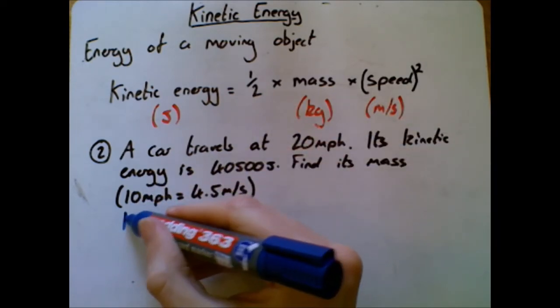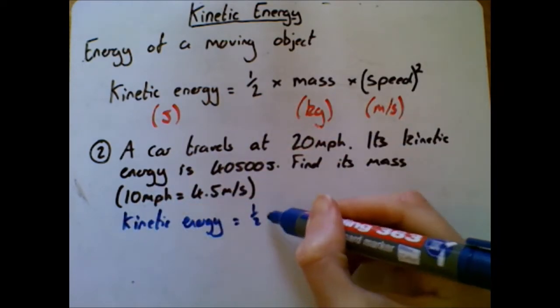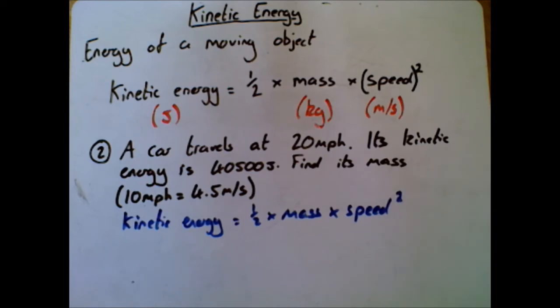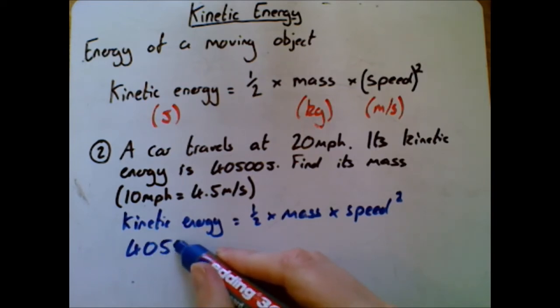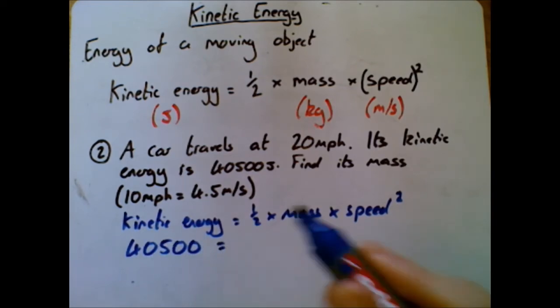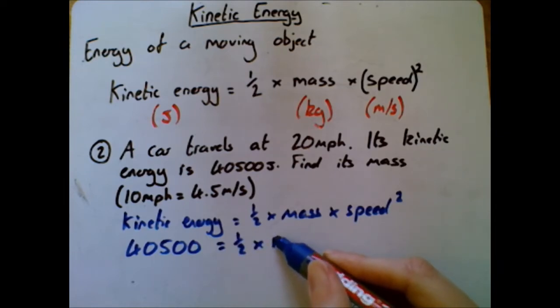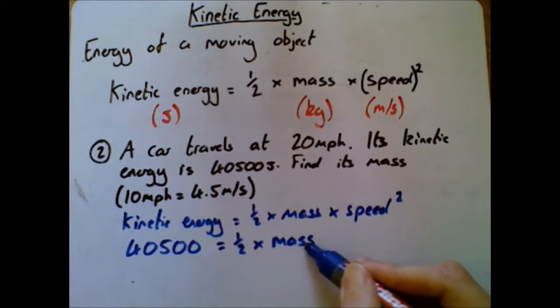A few things we need to be careful of here. The first thing I'm going to do is just write out our formula again. Now we need to put in what we know. So kinetic energy we actually know in this case is 40,500 joules, equals half times mass is what we're trying to find.